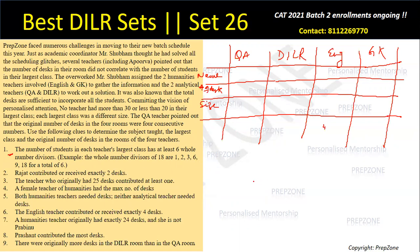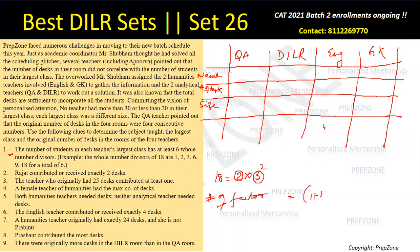Let me explain how to find the number of factors. For example, take 18. The prime factorization of 18 is 2 to the power 1 times 3 squared. To calculate the number of divisors, take each prime's exponent, add 1 to each, and multiply: (1+1) × (2+1) = 2 × 3 = 6. So 18 has 6 factors.